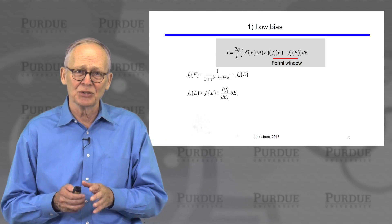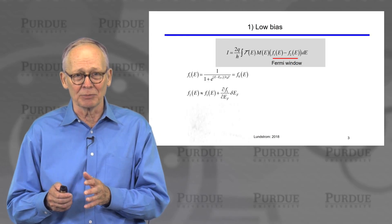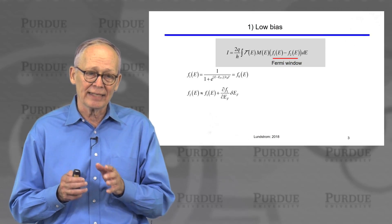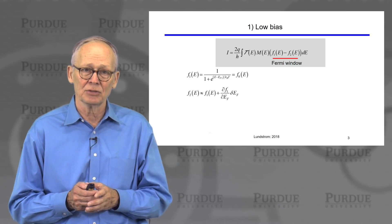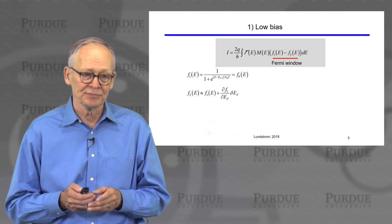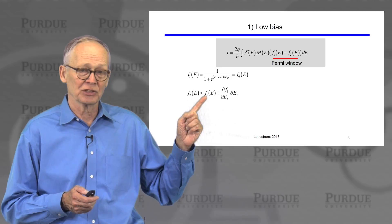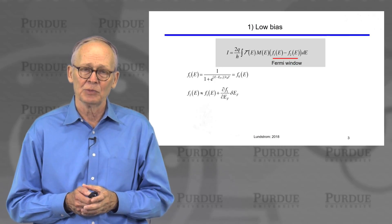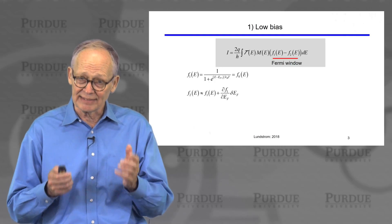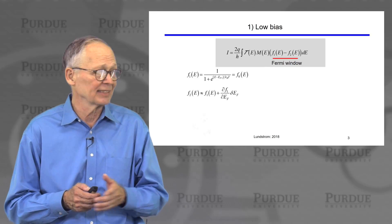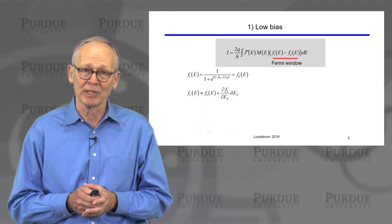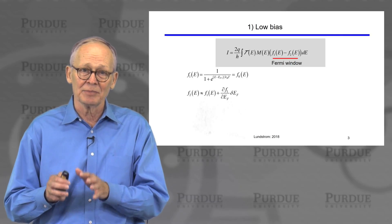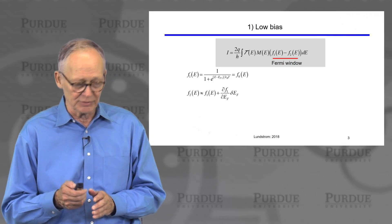The Fermi function in contact two is a little bit different — it's still close to equilibrium because we're applying a small bias, but it's slightly different. We can approximate it by taking a Taylor series expansion: it's the Fermi function in contact one plus the derivative of the Fermi function in contact one with respect to the Fermi level, times the change in Fermi level between the two contacts. Higher order terms can be discarded since we're at very low bias.